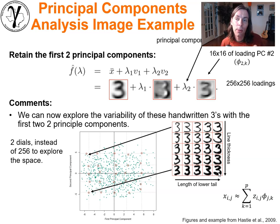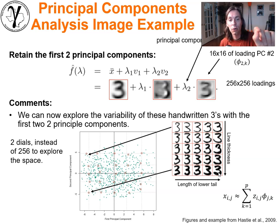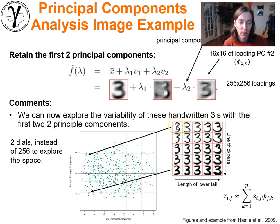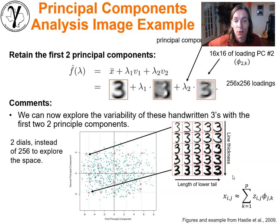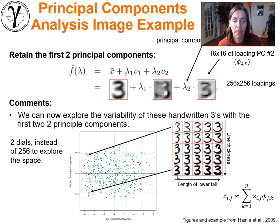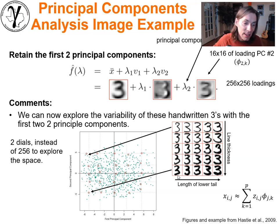Short tail versus long tail — that's a big contributor to variance in threes written by different people. Looking down principal component score two, which is orthogonal and describes different components of variance, the difference between images is how hard you push with the pen — how dark the three is and how thick the lines are. This is fascinating — a great example of PCA revealing meaningful structure.